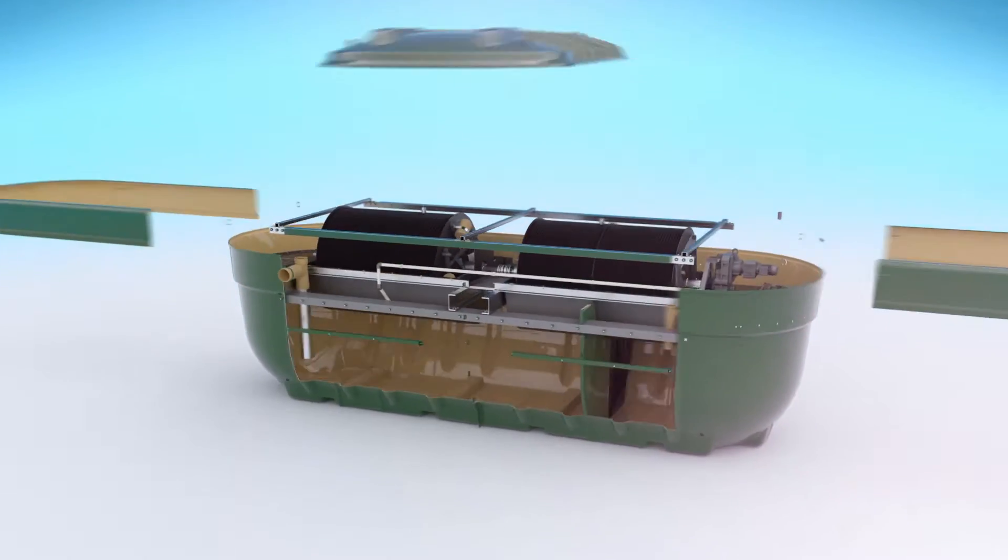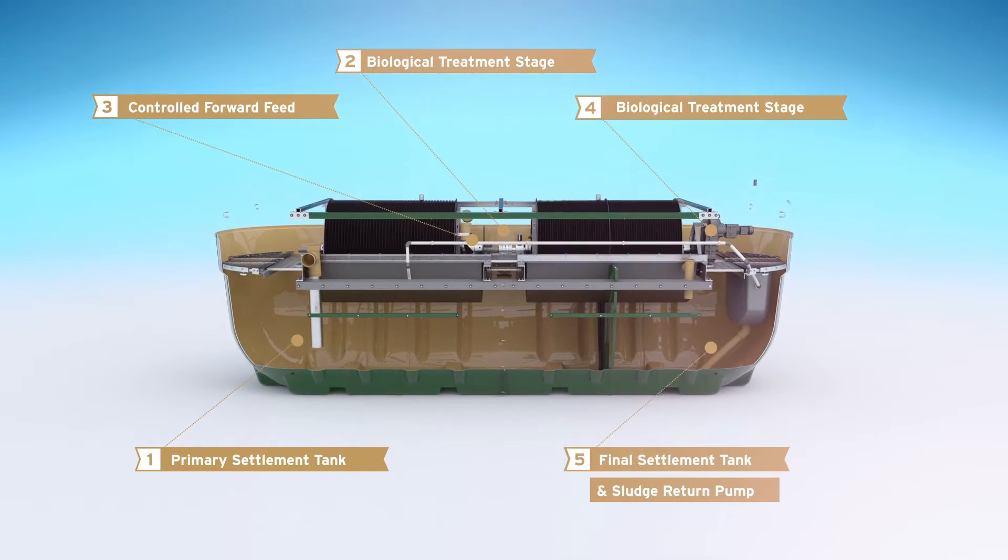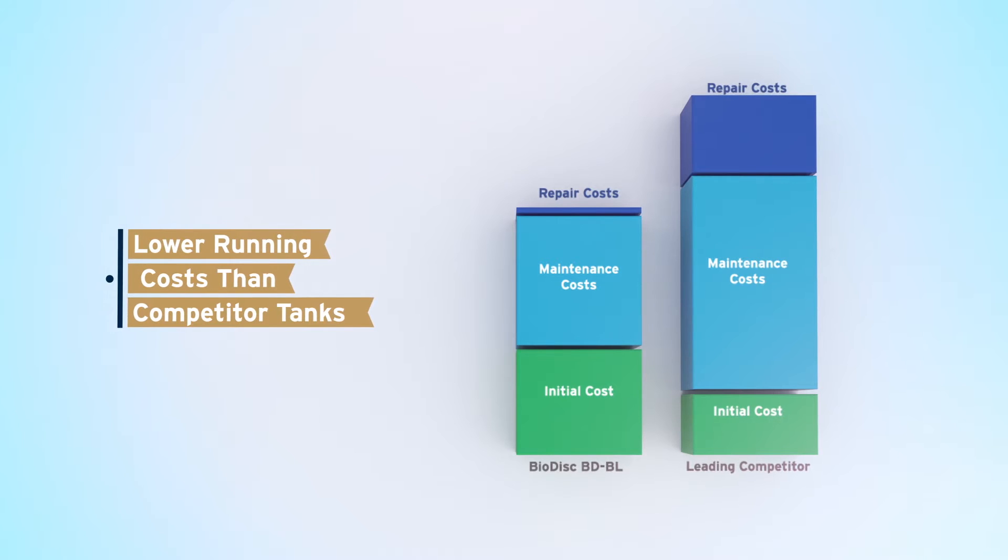Biodisc is one of the only packaged sewage treatment plant ranges to use the patented rotating biological contactor system to break down sewage, offering lower running costs than any other commercial wastewater tank on the market and a rapid return on investment.